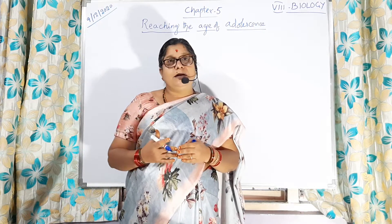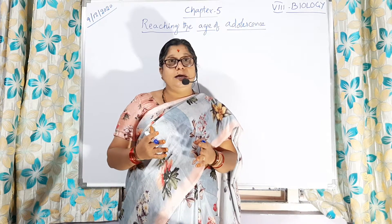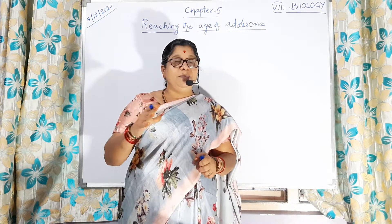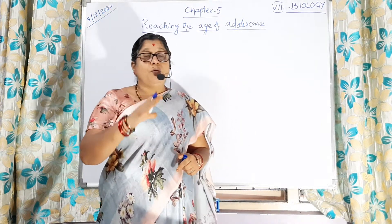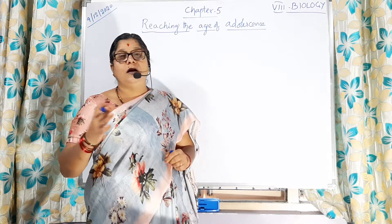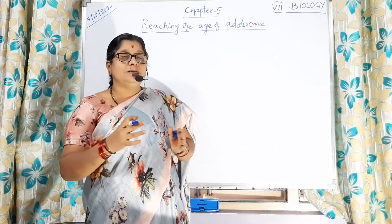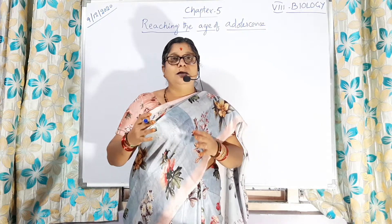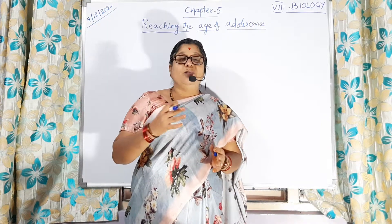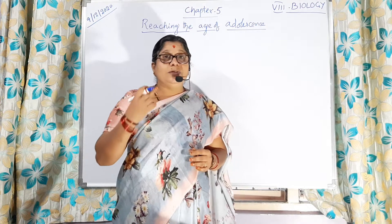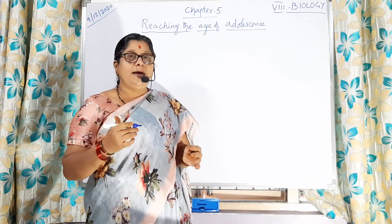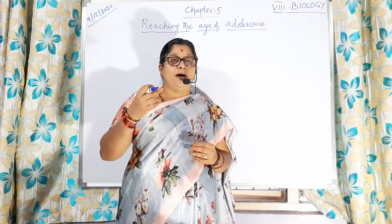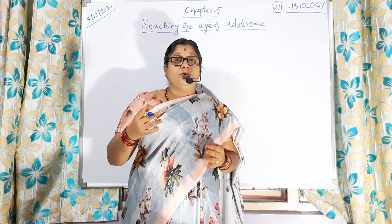Secondary sexual characters are those seen in boys and girls separately on the onset of puberty. When boys or girls enter into the adolescent period, some changes are going to be seen. In boys, beard and moustache will be seen, growth of hair under armpits, and development of genital organs will be observed.